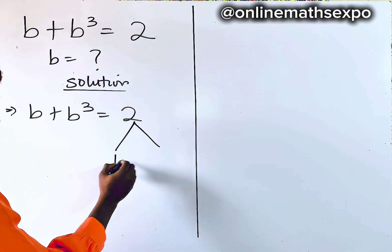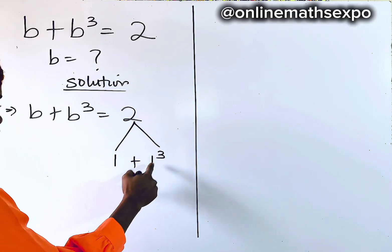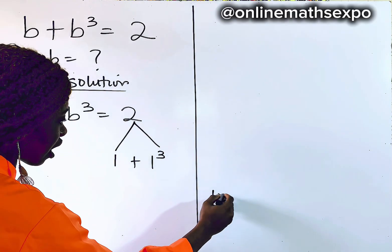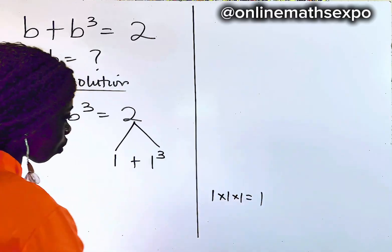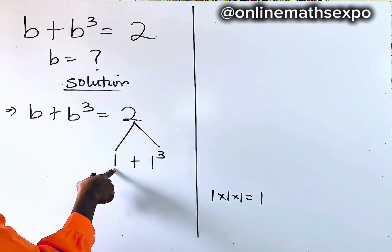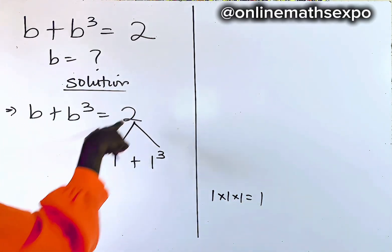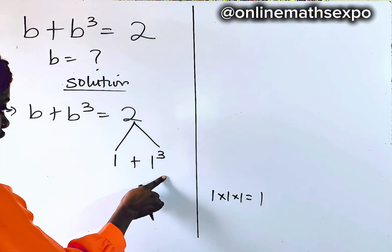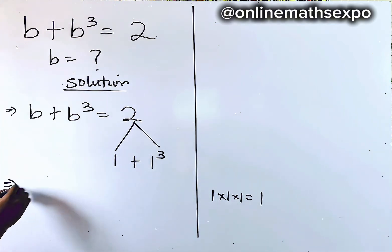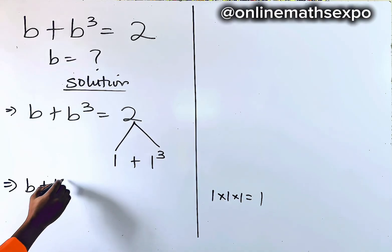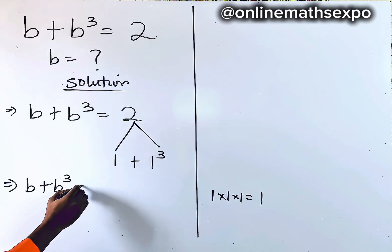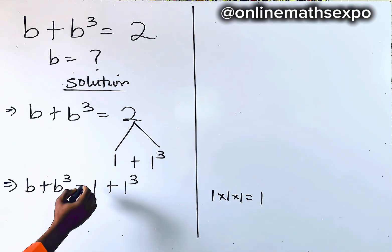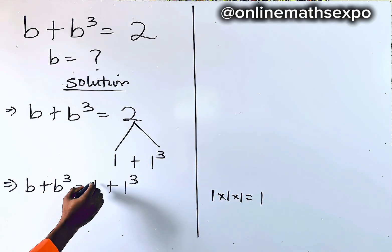We know that such a number is going to be one, because 1 + 1³ = 1 × 1 × 1 = 1, and 1 + 1 gives us back two. So we replace the right side: b + b³ = 1 + 1³.